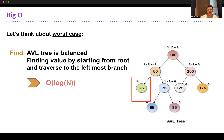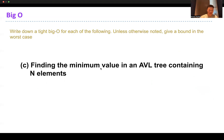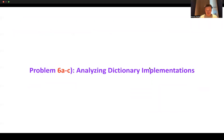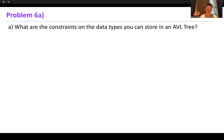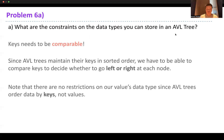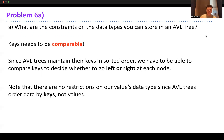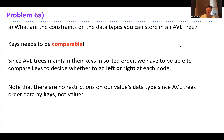This brings up an interesting point about analyzing dictionary implementations. What are the constraints on data types you can store in an AVL tree? They have to be comparable. AVL trees maintain ordering and balance based on a sorted order - everything to the left is smaller, everything to the right is bigger. So you need some way to compare values. That's the constraint for AVL trees and binary search trees more broadly: values must be comparable.